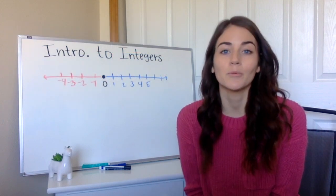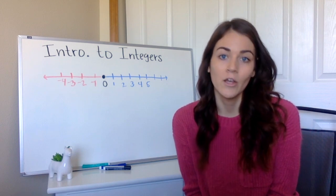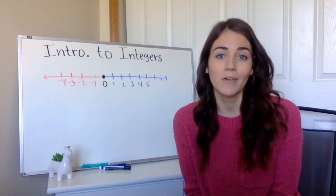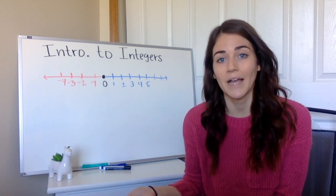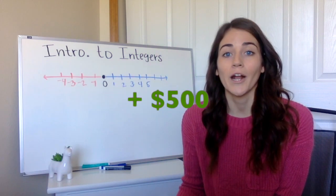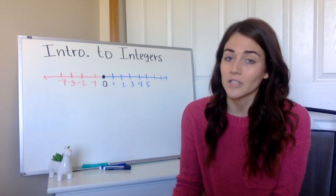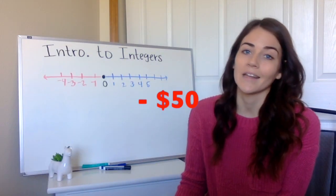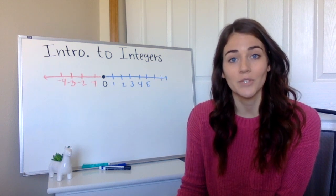And then the third and probably the most important and most used is going to be money. For example, if you look at a bank account, let's say you make $500 so you deposit $500 in your account, that's going to be a positive 500. Where if you go and buy a video game and you spend $50, that's going to be a negative $50. So money and banking is definitely another place we use integers.